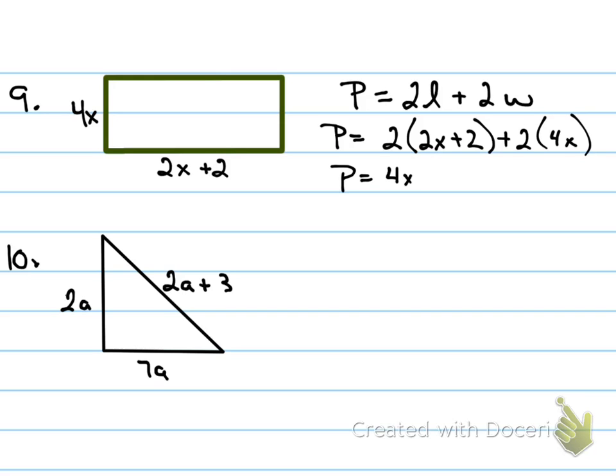Distributive property. 2 times 2X gives me what? 4X. Oh, sorry. Hold on. Okay. 2 times 2 is? 4. 4. Plus, what is 2 times 4X? 8X. Now, can you simplify anything? What can you simplify? 4X and 8X. Can you add them all together?